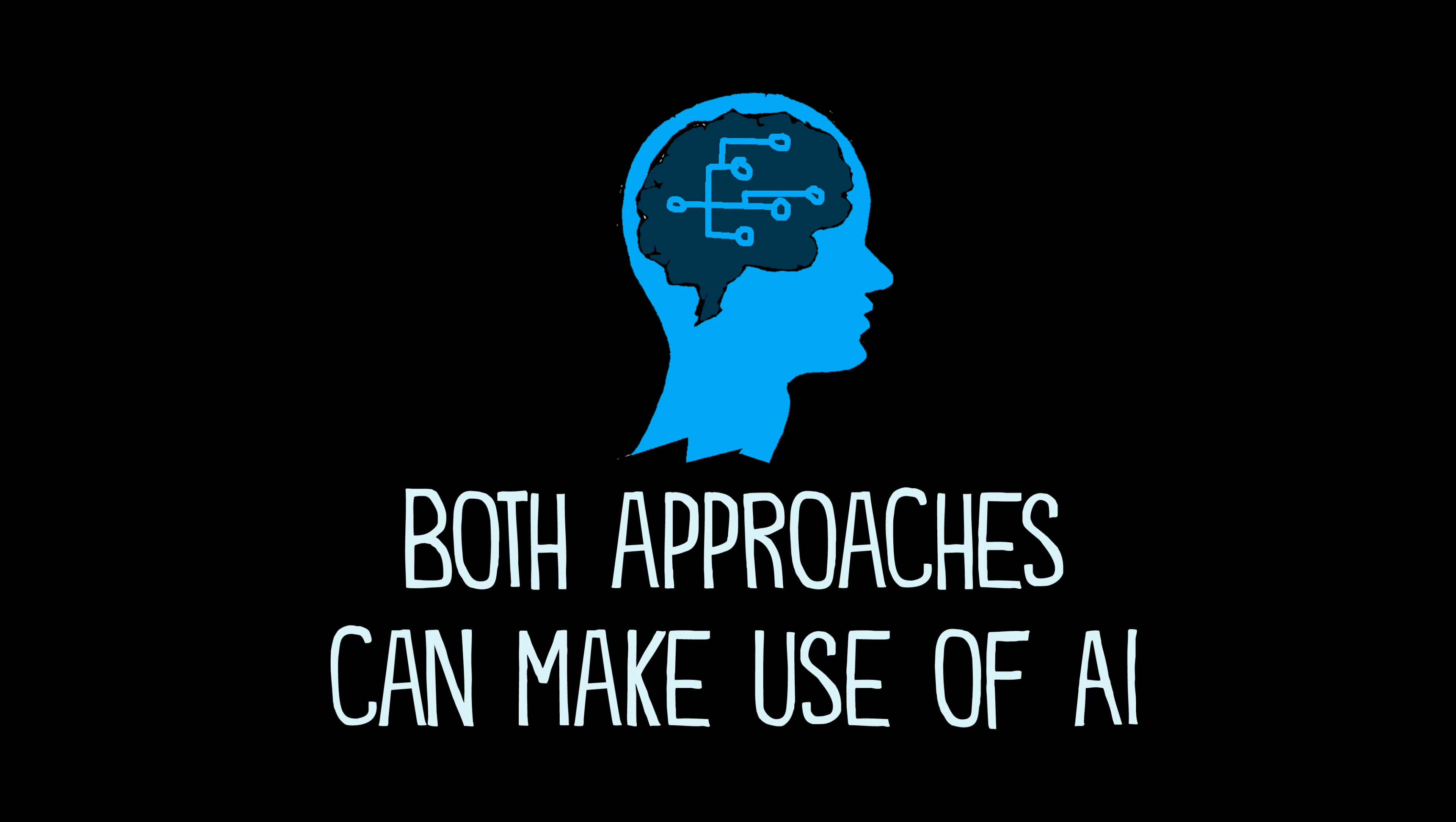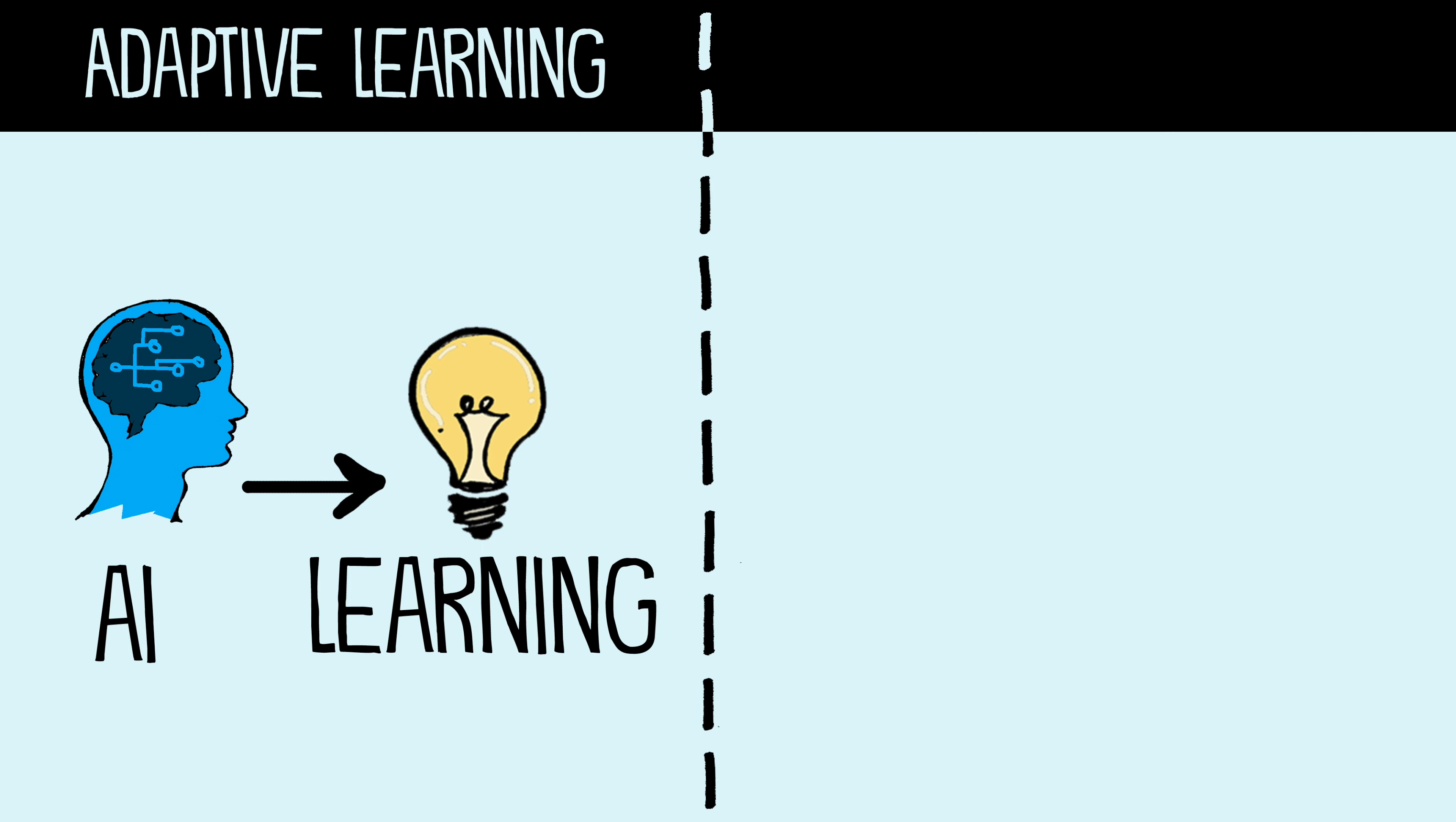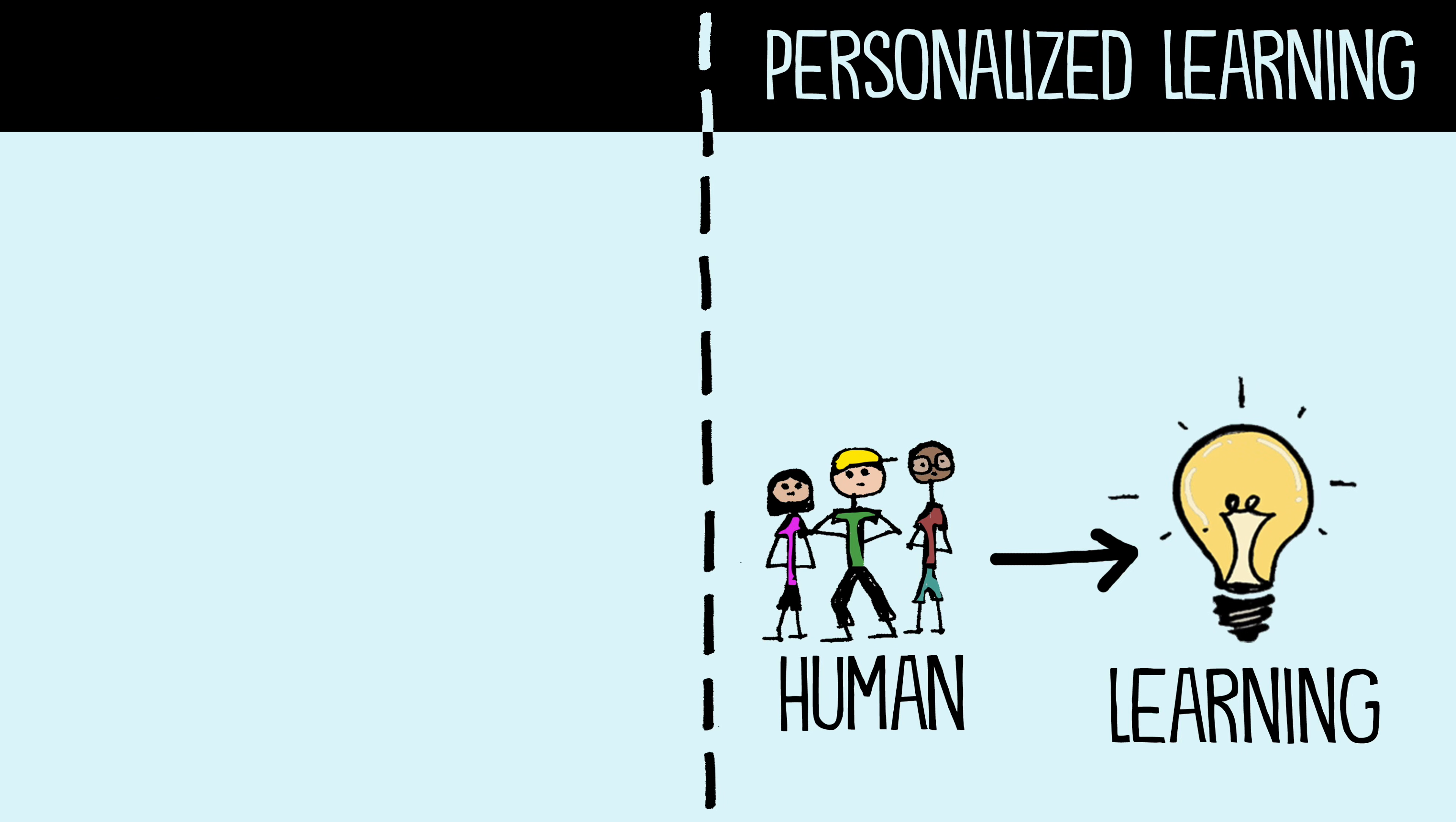Moreover, both approaches can make use of AI. In adaptive learning, AI fuels the learning process, but in personalized learning, AI informs the process. In other words, personalized learning remains at its core human-driven.